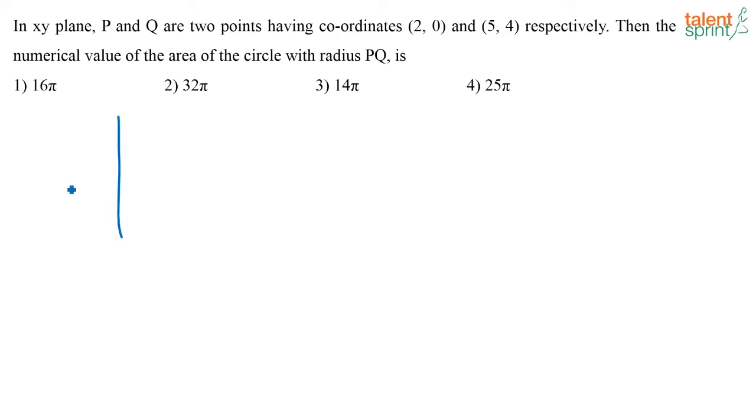So in the xy plane, this is x and this is y. P and Q are two points. What is the coordinate of P? It is nothing but (2, 0) and coordinate of Q is (5, 4).